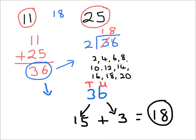You'll notice that the eighteen matches up both ways. So the simple steps to find a halfway number: step one, add the two numbers; step two, half the result.